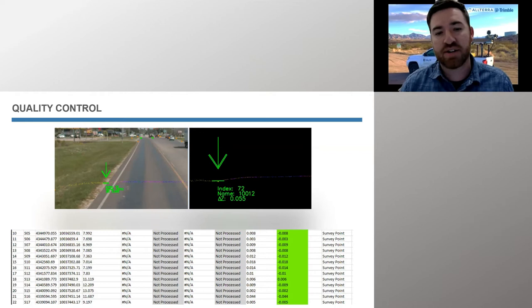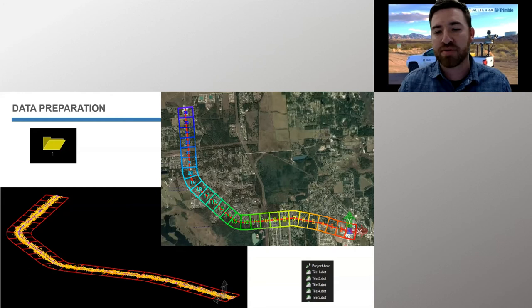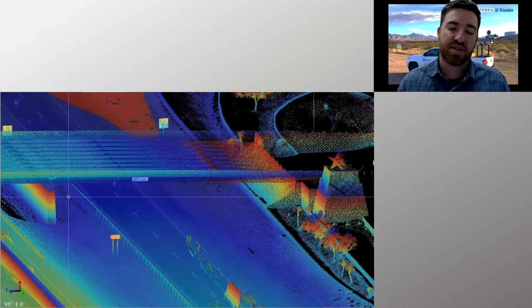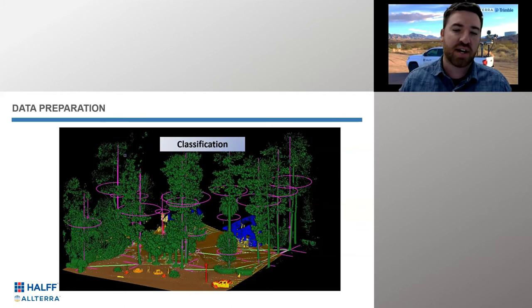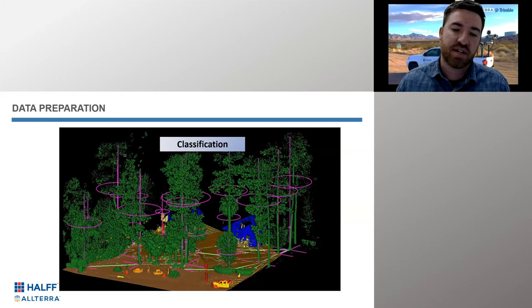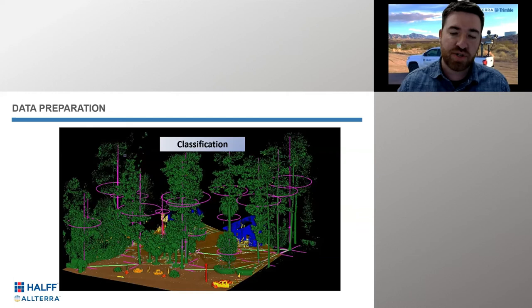Moving along — data prep: we get huge corridors with mobile mapping, so we have to tile it properly, and we've got great tools to do that. Here's an example of 70-mile-an-hour data acquisition. Then classifying the data — here's an example of TBC's classification tools. Not only is TBC classifying it, but it's going a step further and digitizing your assets — you're seeing trees being digitized with location, height, and vegetative spread into a GIS or CAD database.